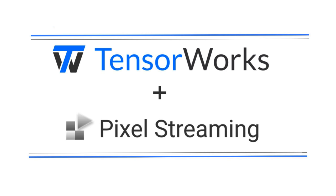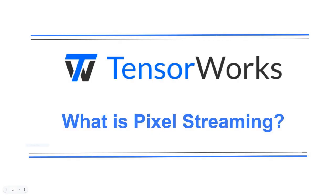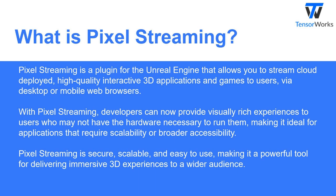By splitting up the steps into smaller, separate videos, we can update and replace each step as they change over time, ensuring accurate, helpful information. What is Pixel Streaming? Pixel Streaming is a plugin for the Unreal Engine that allows you to stream cloud-deployed, high-quality, interactive 3D applications and games to users via desktop or mobile web browsers.